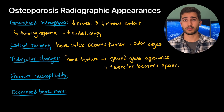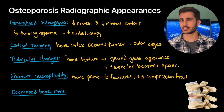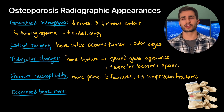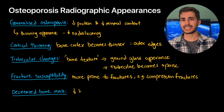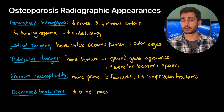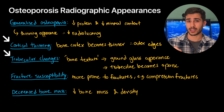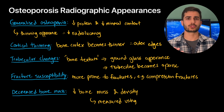Fracture susceptibility means osteoporotic bones are prone to fractures, particularly compression fractures in the vertebrae, which present as a vertebral body collapsing in on itself. But it doesn't have to be in the spine — common areas include the hips and wrists. Decreased bone mass is the overall reduction in bone mass and density, visible in both the thinning cortex and the trabecular changes. The extent of bone mass loss is measured using a DEXA scan, but you can also see the effects on general x-rays.